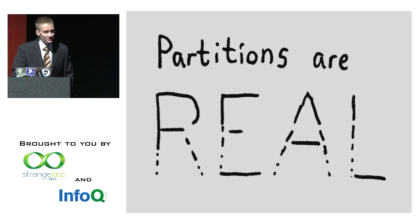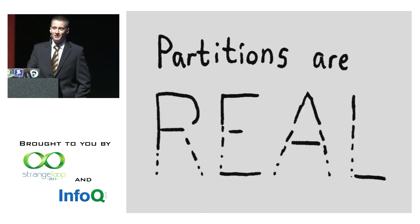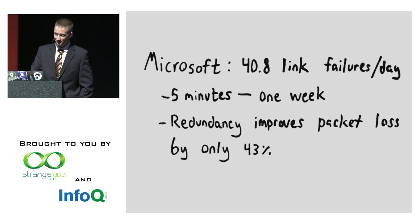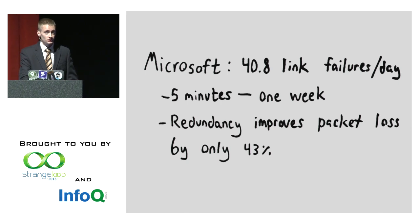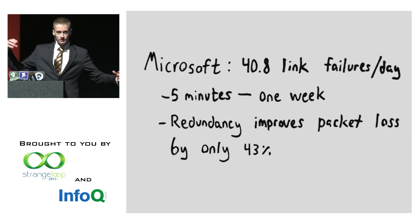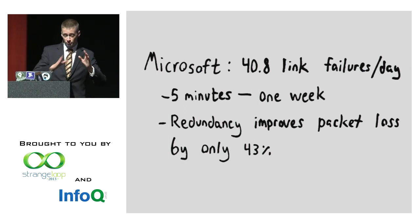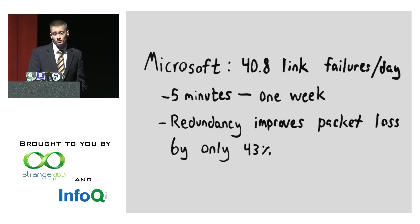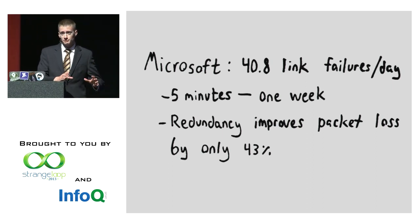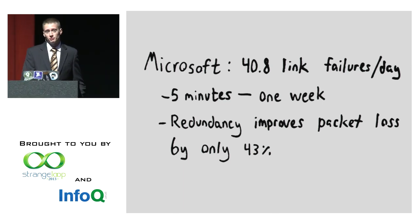This is not just a theoretical construct — partitions are actually a real problem. Microsoft, for example, sees 40.8 link failures per day, ranging from five minutes to a week for their long-distance lines. Moreover, their redundancy — having multiple paths for the same links — only improves the odds of packet loss by 43%. So even with good hardware, good change management, and redundancy, they're still not able to eliminate network partitions.